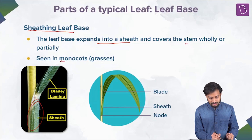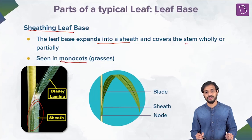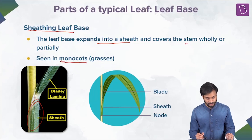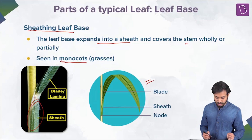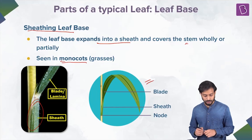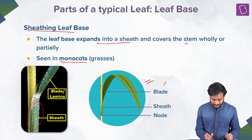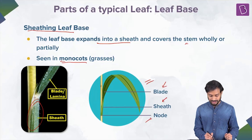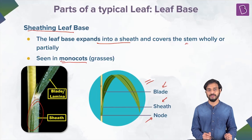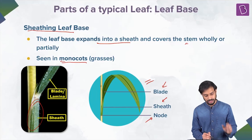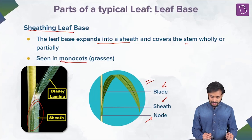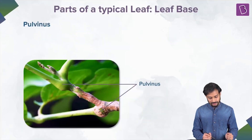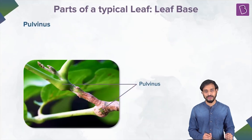This sheathing leaf base is generally seen in the monocots — the grasses. Take a look at this image — it will be more clear for you. Can you see the leaf blade over here, the sheath, and there's the node. Fine, very simple.